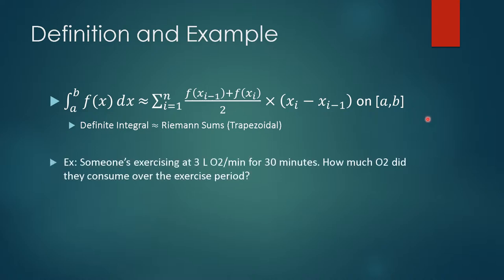Let's do an example. This is going to be a very simple example. So someone's exercising at three liters of O2 per minute. So the liters of O2 per minute tells us this is a rate. For 30 minutes, they're doing that for 30 minutes. Consistently they're at three liters of O2, a rate per minute for 30 minutes. And the question is, how much O2 or oxygen did they consume over the exercise period?